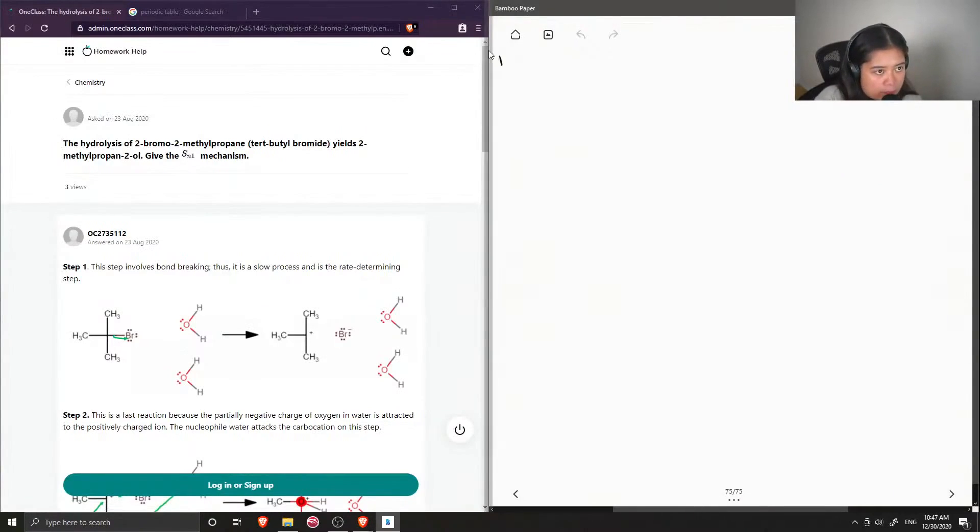Okay, so now question 10: the hydrolysis of 2-bromo-2-methylpropane yields 2-methylpropane-2-ol. Give the SN1 mechanism. Okay, so first let's write the structure of 2-bromo-2-methylpropane. So if we try to write down the structure of this compound, let's first identify the parent group.